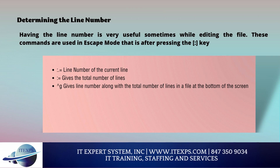Determining the line number: Having the line number is very useful while editing a file. These commands are used in escape mode after pressing the colon key. Colon dot equals finds the line number of the current line. Colon equals gives the total number of lines. Caret with lowercase g gives the line number along with the total number of lines at the bottom of the screen.